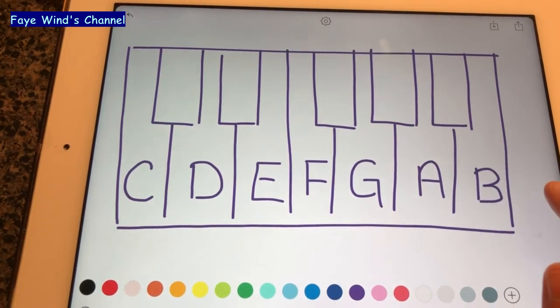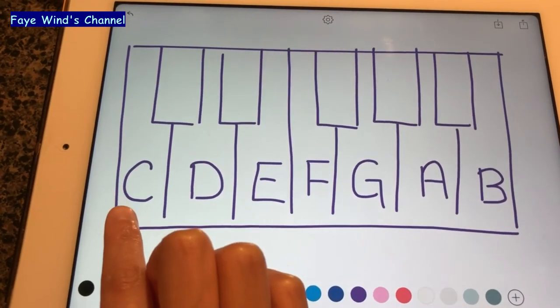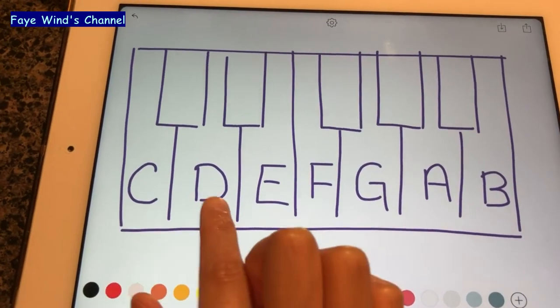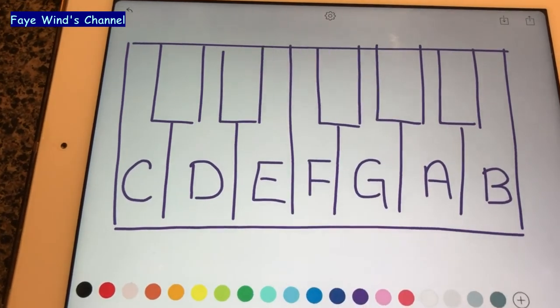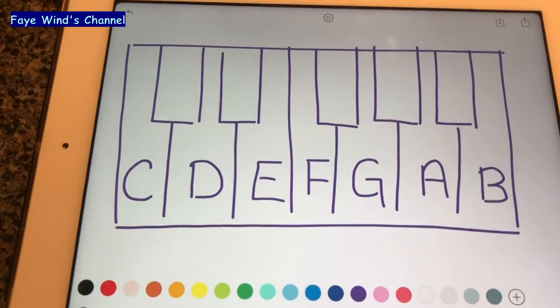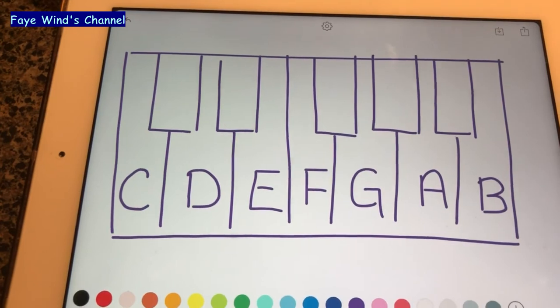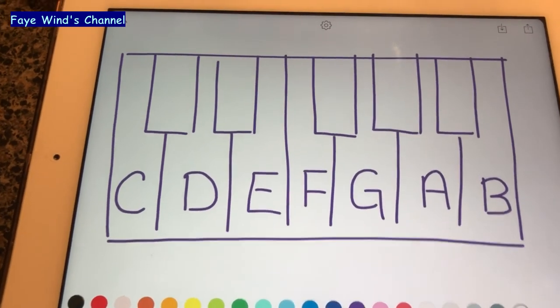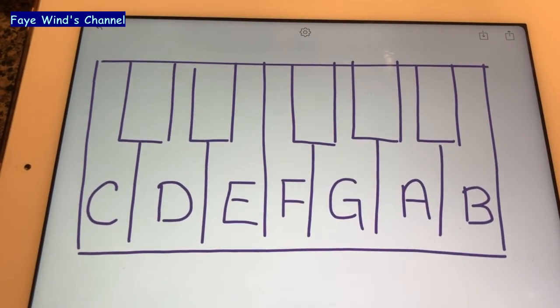And the next one will be back to this one. It will be C, D, E, and following. And it will just repeat itself. And there you have it. Here's a piano keyboard on paper.